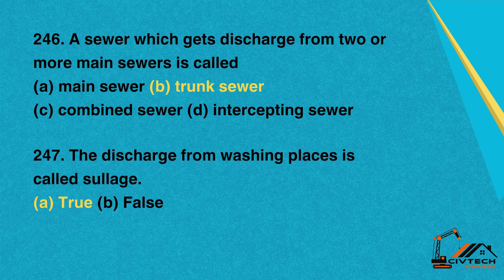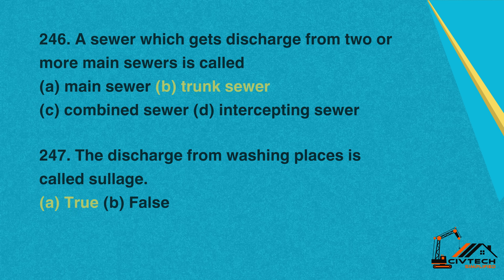Question 247: The discharge from washing places is called sullage. A. True. B. False. Correct option: A. True.